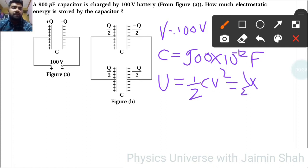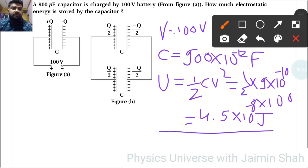Half into C, 9 into 10 raise to minus 10, into 100. That will be 4.5 into 10 raise to minus 8 joules. So that is the first energy.